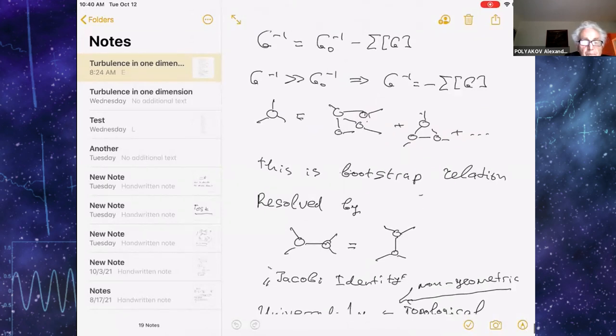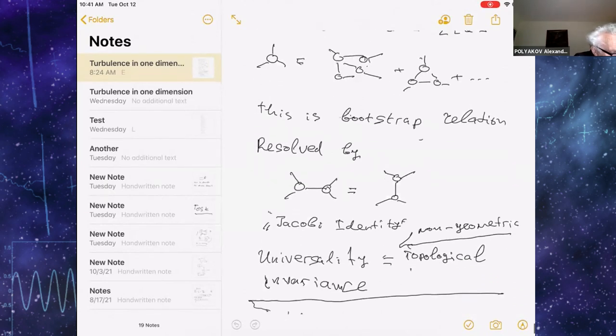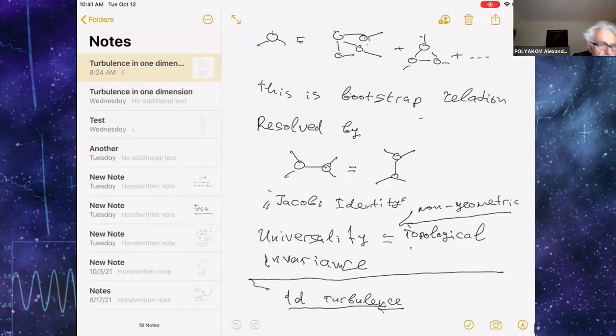Bootstrap is the idea that critical fluctuations are composed out of themselves. I don't have time to go into more details. The solution of the bootstrap relation basically means that you have some complicated equations for correlation functions, which do not contain any parameters.